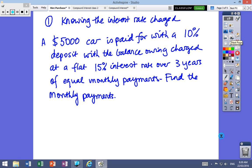So the first one is you know the interest rate. So we've done a few of these. A $5,000 car, okay, you've got an amount, you've got a deposit and you've got interest charged and you've got three years and you're paying it off monthly. So they're the key words.